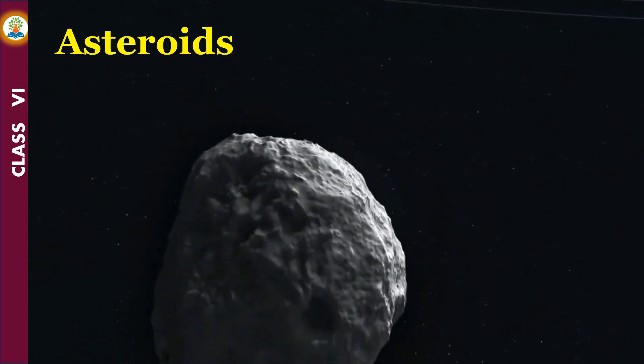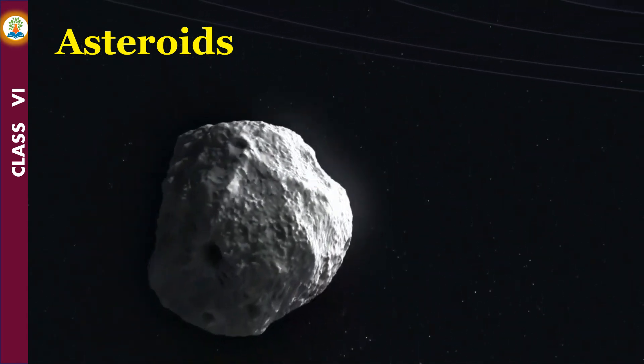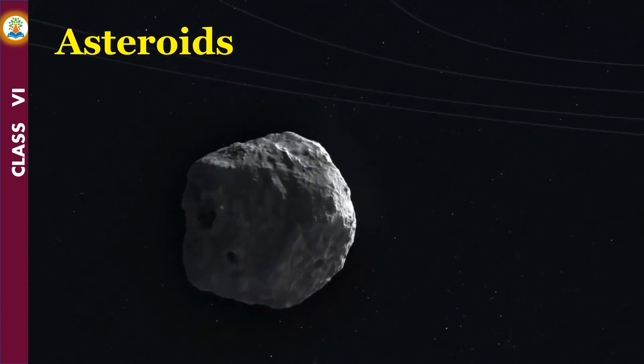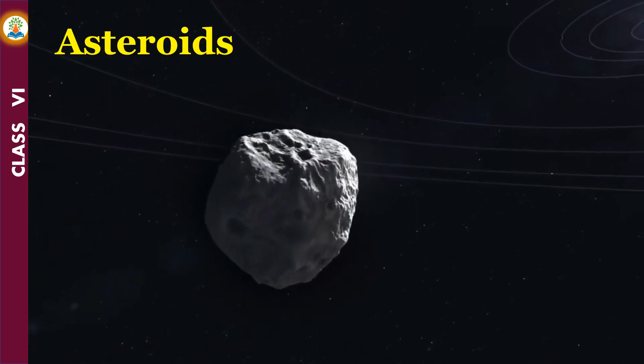Apart from the stars, planets, and satellites, there are numerous tiny bodies which also move around the sun. These bodies are called asteroids. They are found between the orbits of Mars and Jupiter.